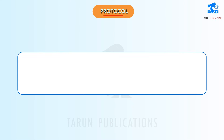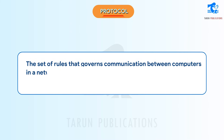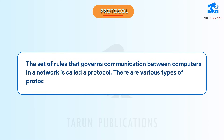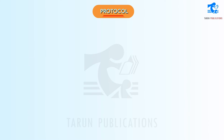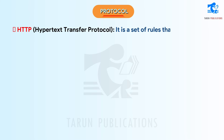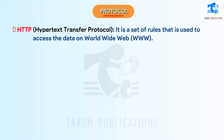Protocol: The set of rules that governs communication between computers in a network is called a protocol. There are various types of protocols on the internet. HTTP is a set of rules used to access data on the World Wide Web (WWW).